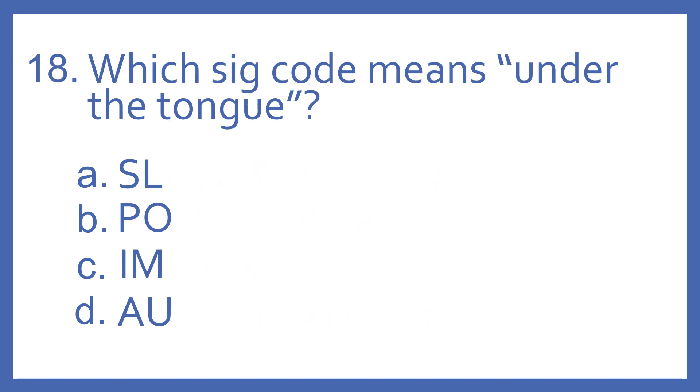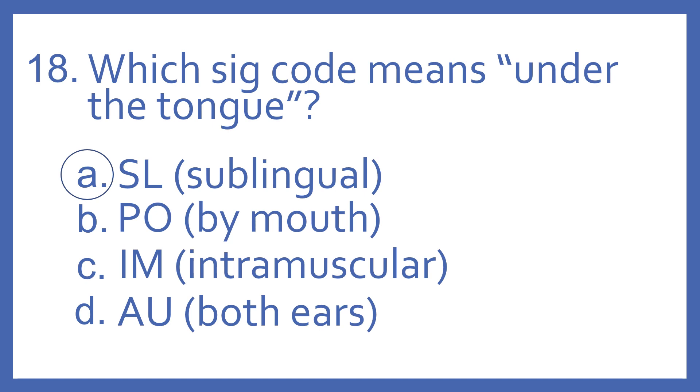Number 18, which SIG code means under the tongue? A, SL. B, PO. C, IM. Or D, AU. And the answer is A. SL means under the tongue. That stands for sublingual, which means under the tongue. PO means by mouth. IM means intramuscular, which is into a muscle. And AU means both ears.